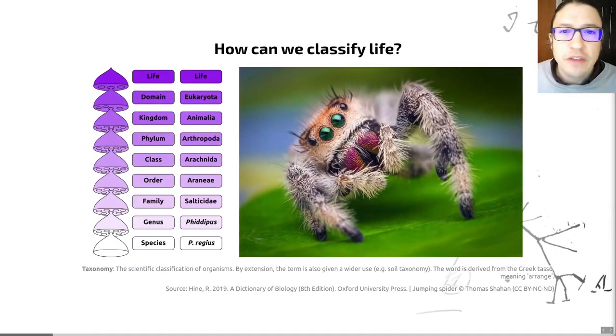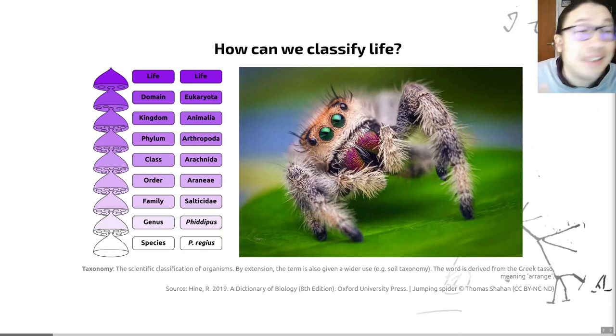But the first thing we need to consider when we're thinking about phylogenetics is how we can classify life. No doubt you will have learned elsewhere that one of the ways we do so is through Linnaean taxonomy. Taxonomy itself is the scientific classification of organisms. By extension, sometimes we call any categorization of anything, such as soils, taxonomy as well. Most scientists use the Linnaean hierarchical classification system. You can see an example of this on this slide.